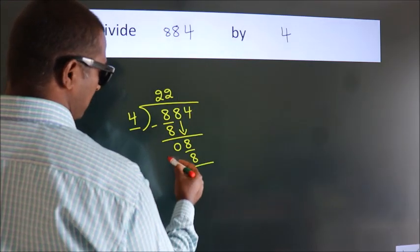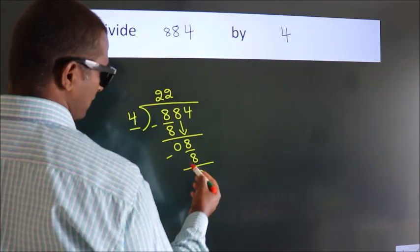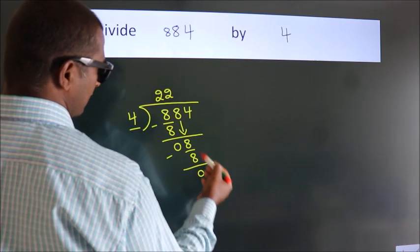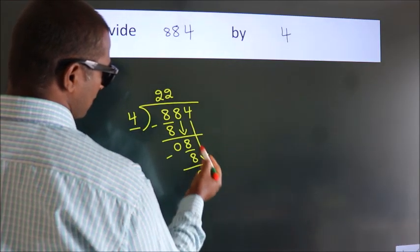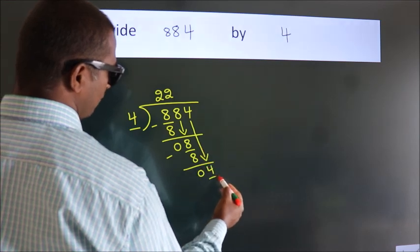Now, we subtract. We get 0. After this, bring down the beside number. So, 4 down.